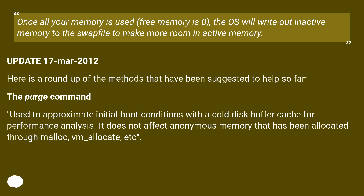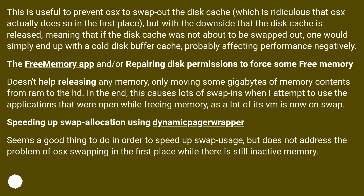Here is a roundup of methods suggested to help so far. The purge command: used to approximate initial boot conditions with a cold disk buffer cache for performance analysis. It does not affect anonymous memory allocated through malloc or vm_allocate. This is useful to prevent the OS from swapping out the disk cache, but with the downside that the disk cache is released, meaning one would simply end up with a cold disk buffer cache, probably affecting performance negatively. The free memory app and repairing disk permissions only moves gigabytes of memory contents from RAM to the hard disk.